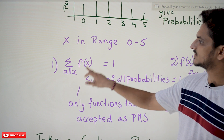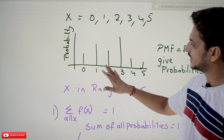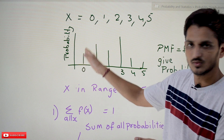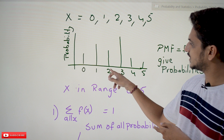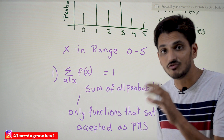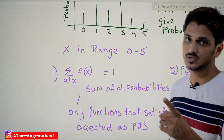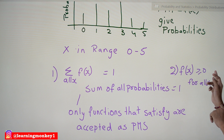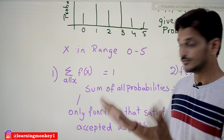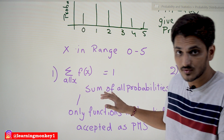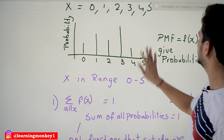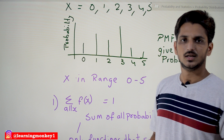The conditions that a discrete probability distribution must satisfy are: first, Σ f(x) = 1 for all x — meaning if you substitute each value (0, 1, 2, ...) into the function it gives the probability value, and the sum of all probability values should be 1. The second condition is f(x) ≥ 0 — there are no negative values for probability, so the function must always provide positive values. If a function satisfies these two conditions, it can be used as a discrete probability distribution function. We call these probability mass functions.